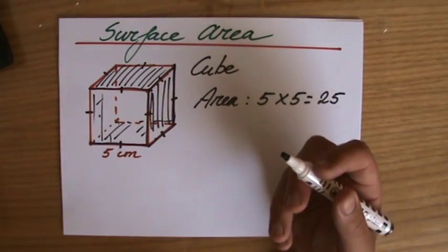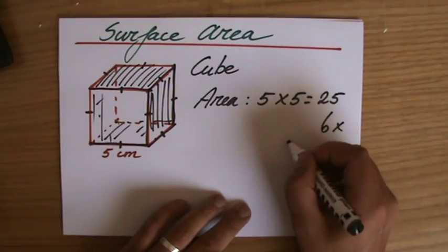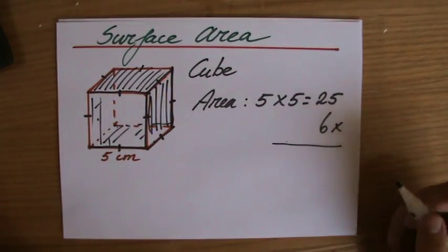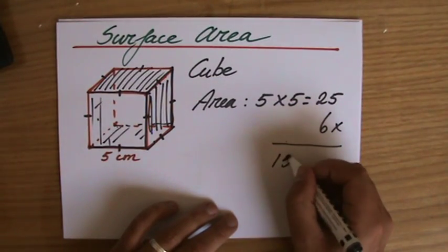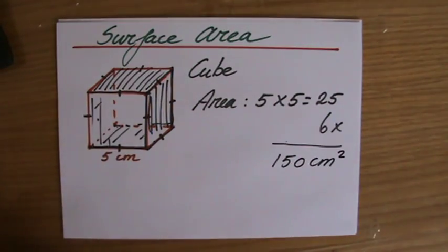How many faces does it have? Well, it has six. So the area of one of them times six is going to give me the total surface area. 25 times 6—that is 150. And the unit is centimeters squared.